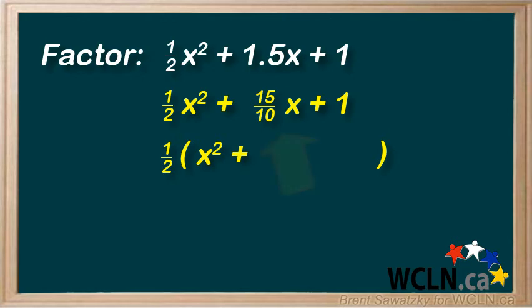One half times what gives us our middle term of 15 over 10x? Well, we need the 15 on top, and then on the bottom, 2 times what gives us a 10? Well, it must be 5 on the bottom.